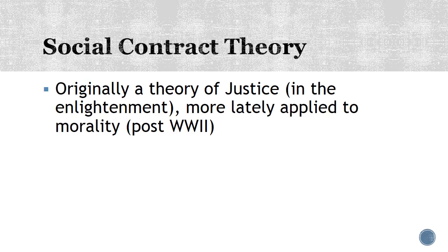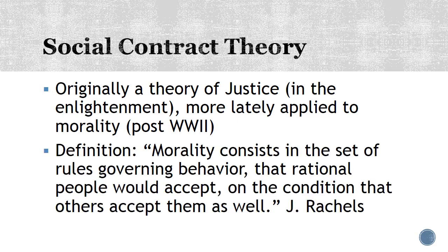Let's define what a social contract theory is and take a look at some of its origins. It was originally a theory of justice, arising in the Enlightenment period, but it's more lately been applied to morality in some of the years post-World War II. A good definition comes from James Rachels — very similar to the one Schaeffer-Landau gives: morality consists in the set of rules governing behavior that rational people would accept on the condition that others accept them as well. You get this notion of a contract, a kind of mutual agreement. The idea is that everybody agrees to follow all the same rules, as long as everybody else agrees to follow just those same rules. That's the essential point behind social contract theory.